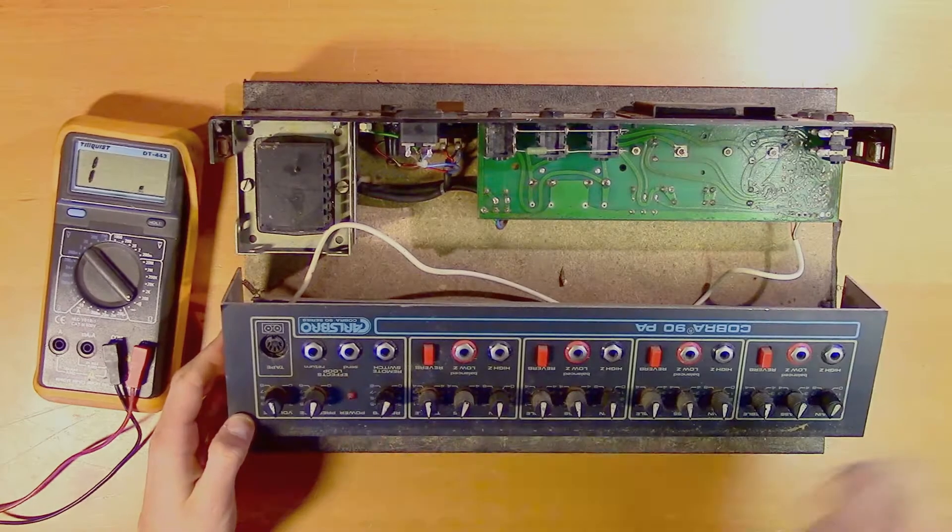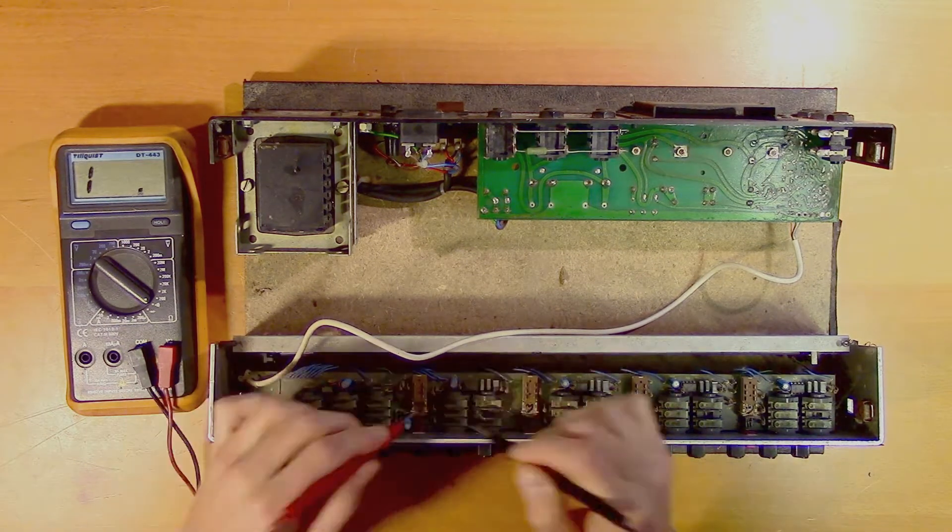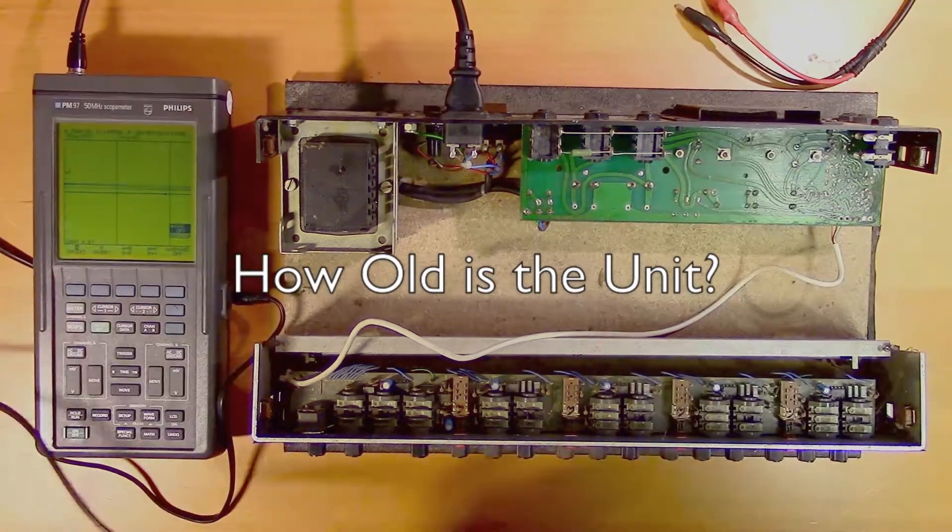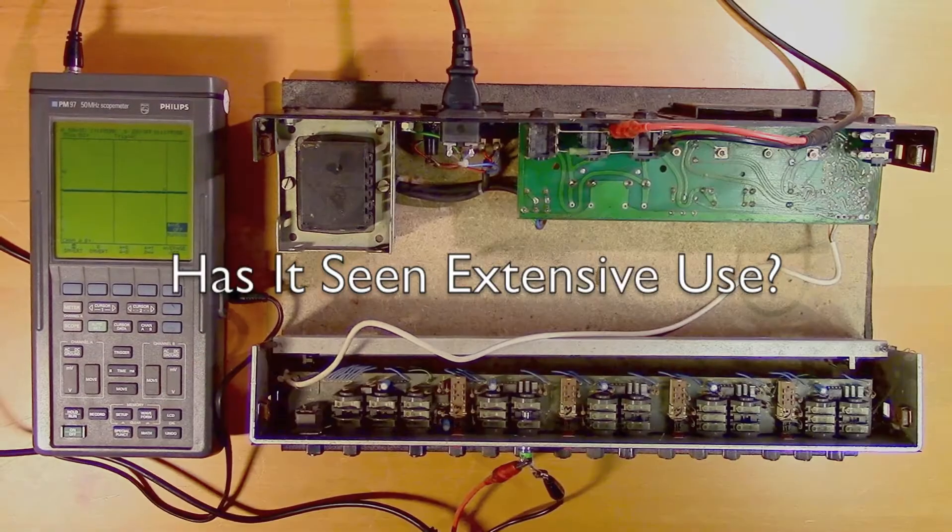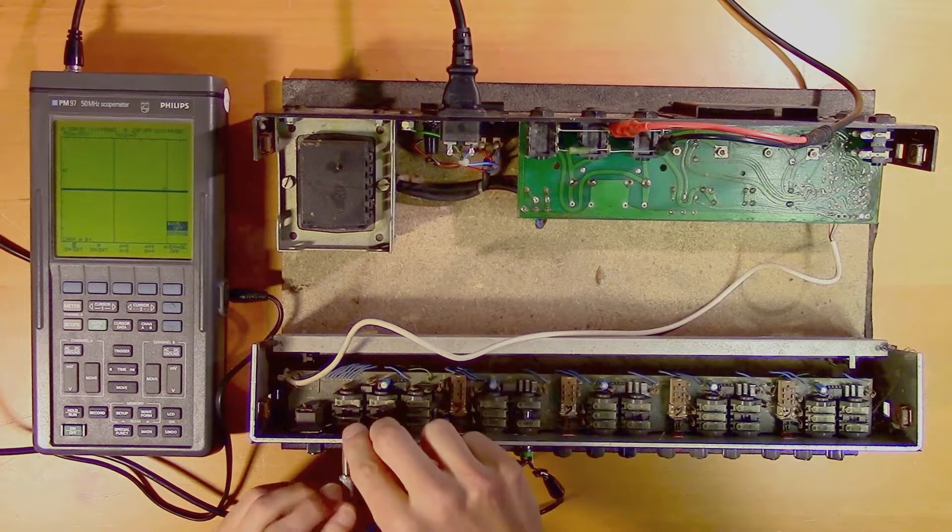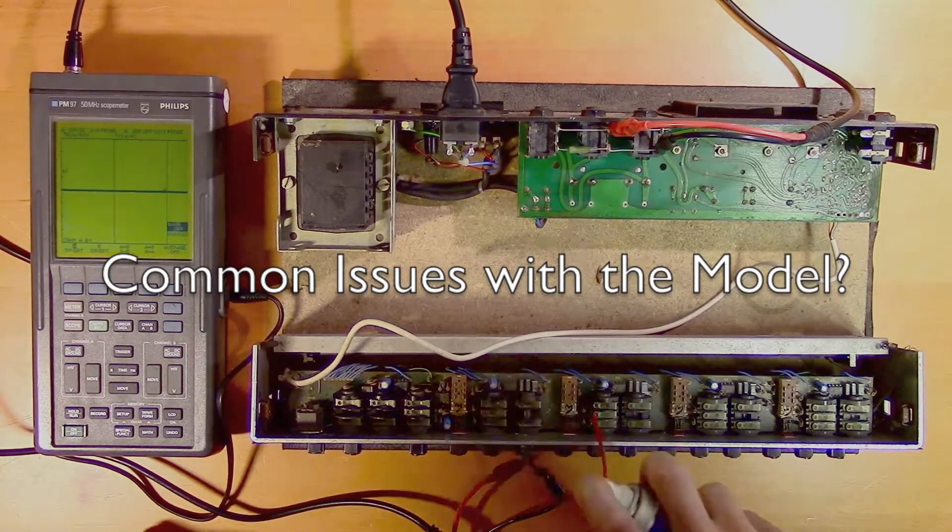Number one: gather information. Before you start the troubleshooting process, you might want to consider any relevant information you have or see if you can find out more. This could be, for example, how old the unit is. If it's a very old unit, you might have problems with dried out capacitors. Has it been extensively used? If that is the case, you might consider focusing on components that wear out. Are there any known common issues with your model, and so on.